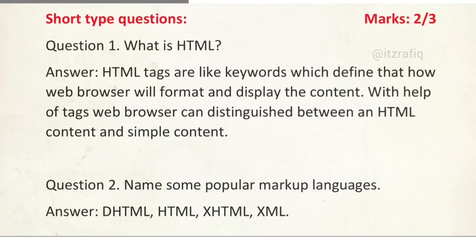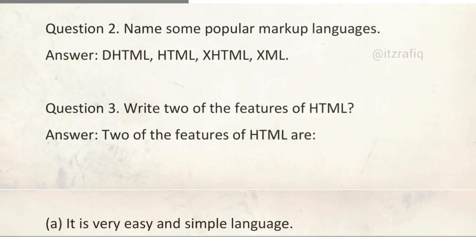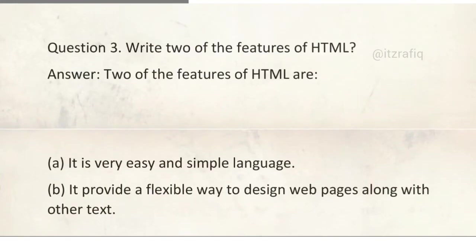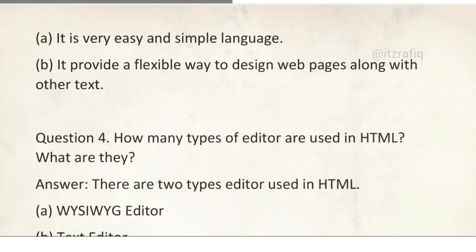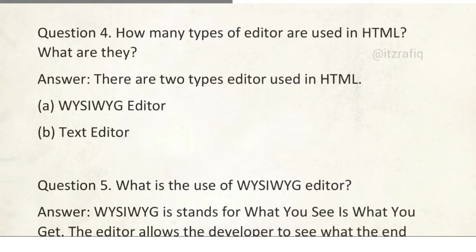Now next, short questions for 2 and 3 marks. First question is what is HTML? Everyone knows that HTML is a scripting language that is used to develop web pages. You can write it yourself or the book one. Name some popular markup languages. They are DHTML, HTML, XHTML, and XML. Number 3: Write two features of HTML. Two features of HTML are: it is easy to learn, it provides a flexible way to design web pages. Number 4: How many types of editors in HTML are there? There are two types of editors: one is what you see is what you get editor and another one is text editor.